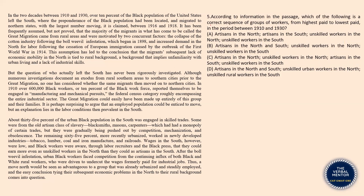Next question: according to the passage, which of the following is the correct sequence of groups of workers from highest paid to lowest paid in the period between 1910 and 1930? It was written that wages in the south were low, and black workers were aware that they could earn more even as unskilled workers in the north than they could as artisans in the south. This means even artisans in the south had lower wages than unskilled workers in the north. The correct sequence therefore should be: artisans in the north, then unskilled workers in the north, then artisans in the south, and unskilled workers in the south.